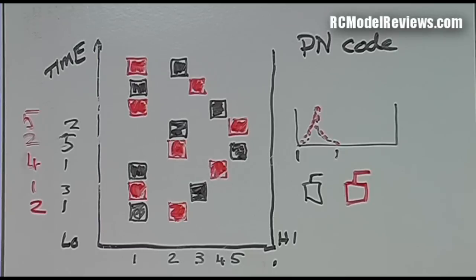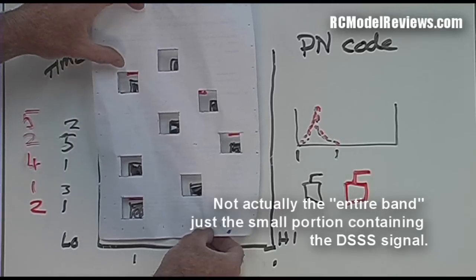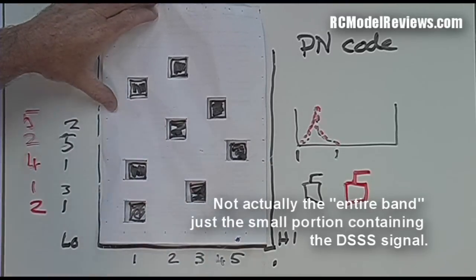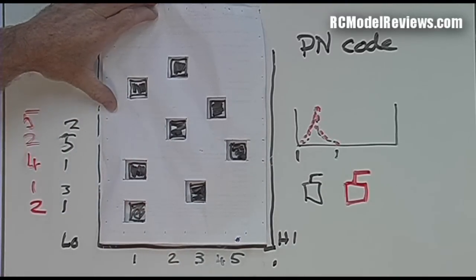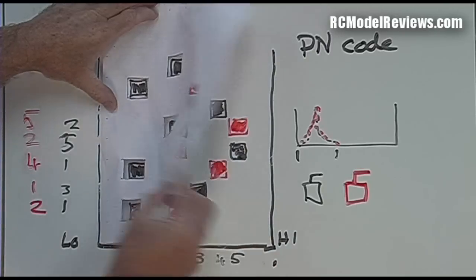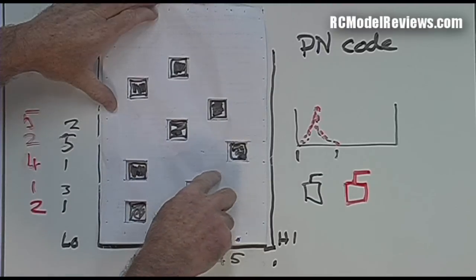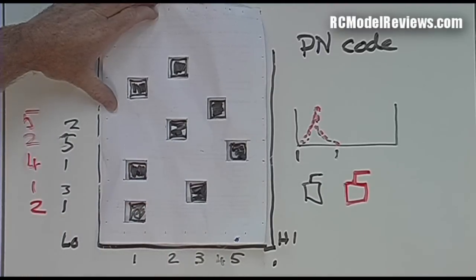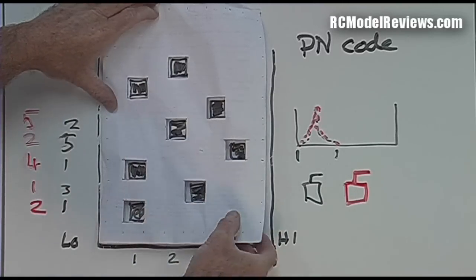Remember, these are tiny bits of information. There's no codes in them, it's just a tiny little bit of information that says there's a part of a one or a part of a zero. How's it going to know which is which? Well that's where the PN code applies to the receiver.